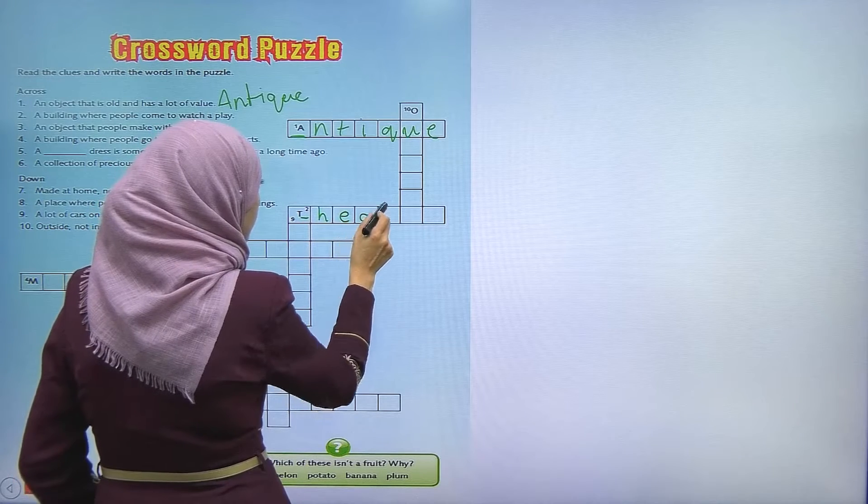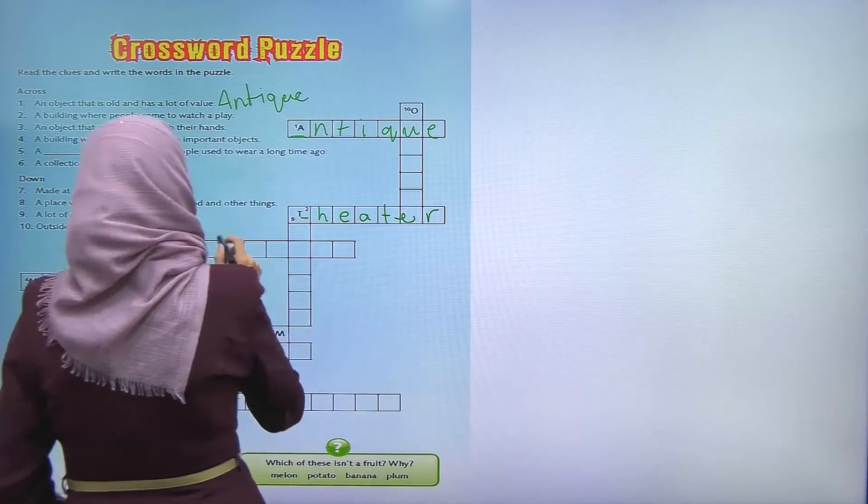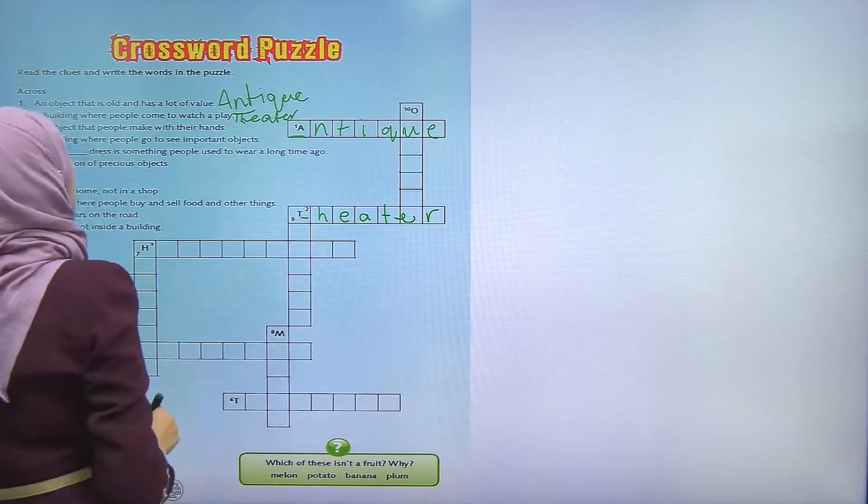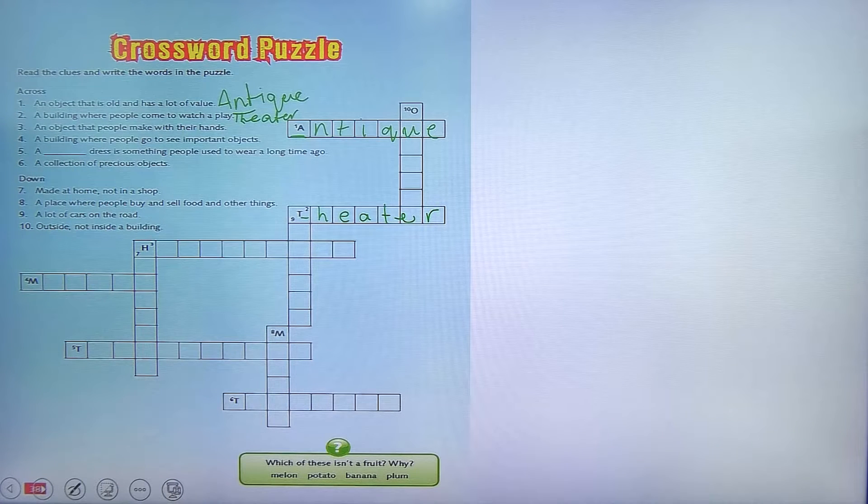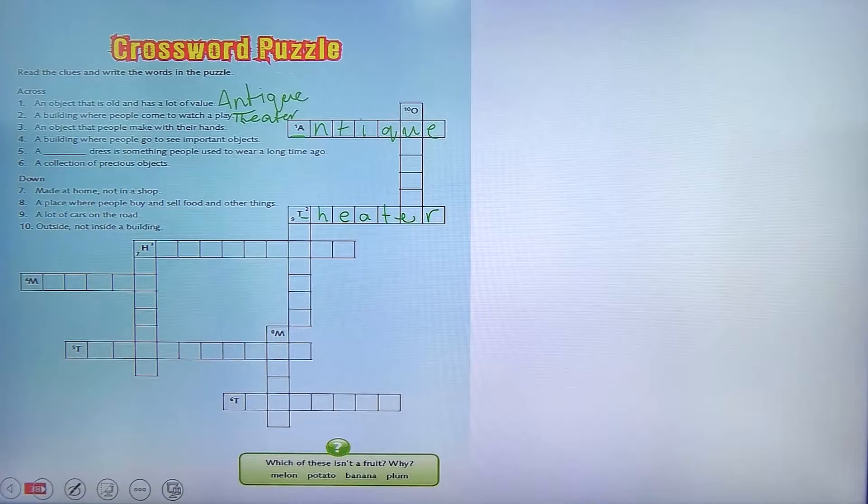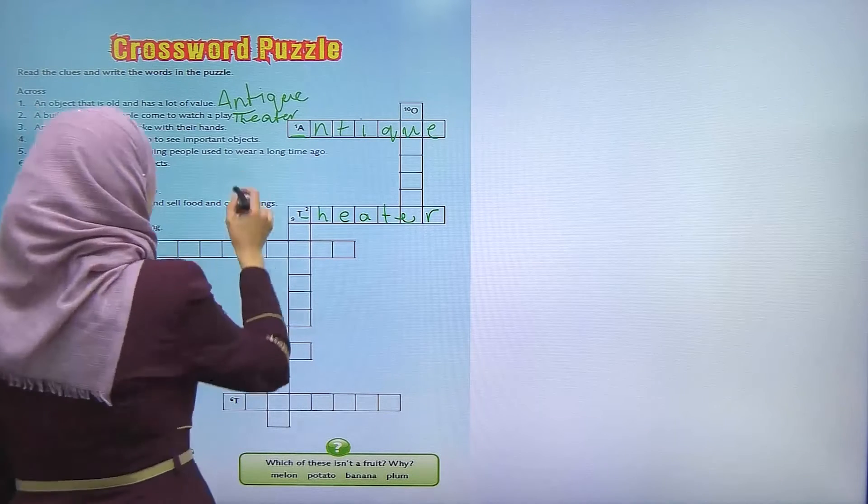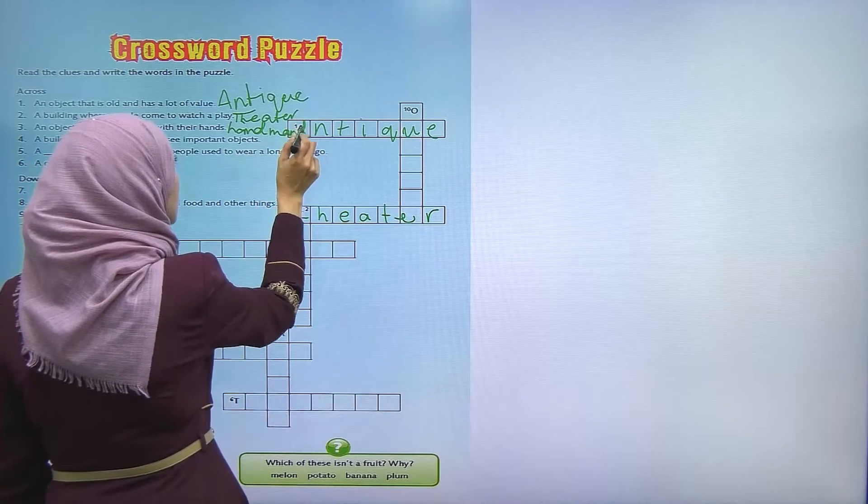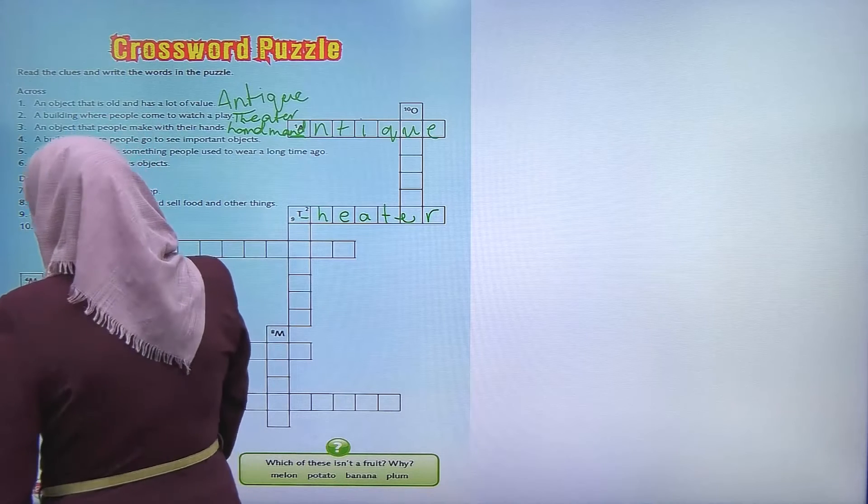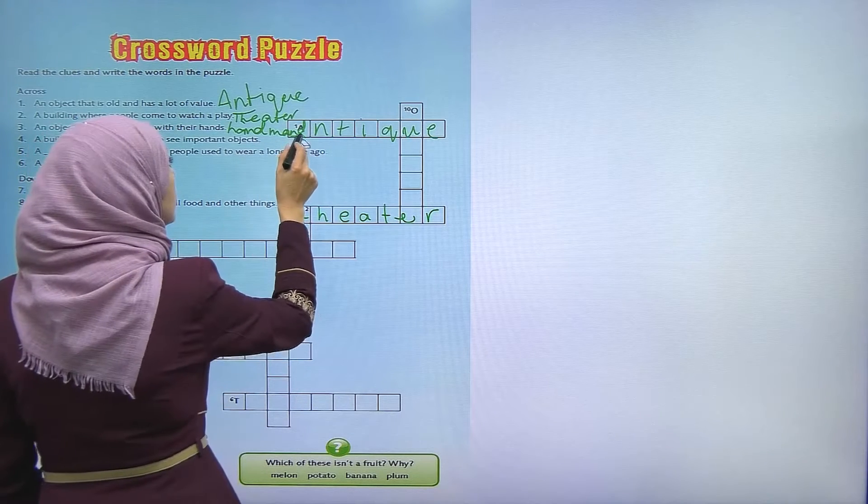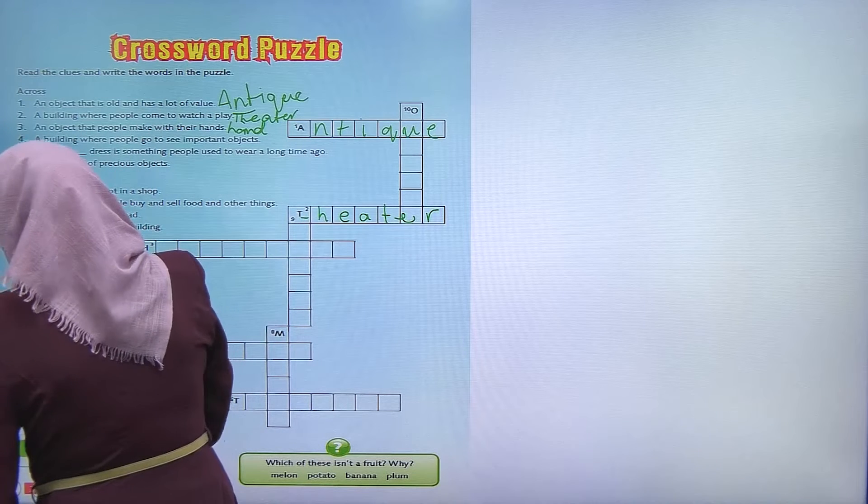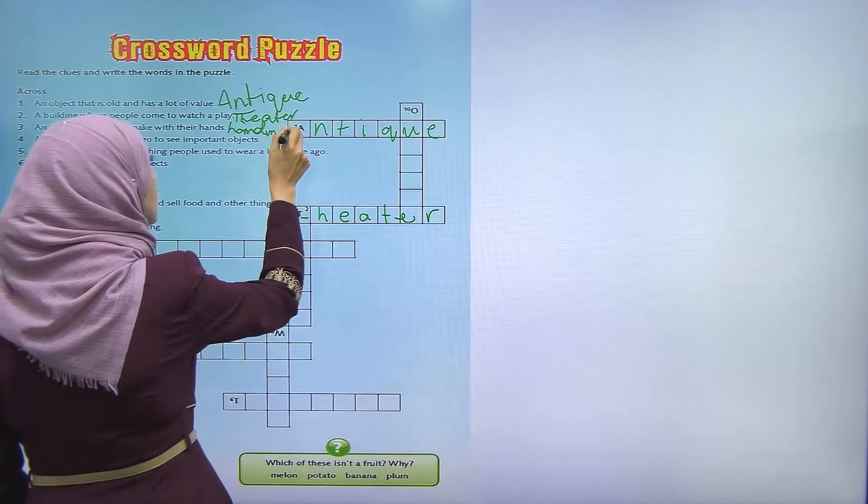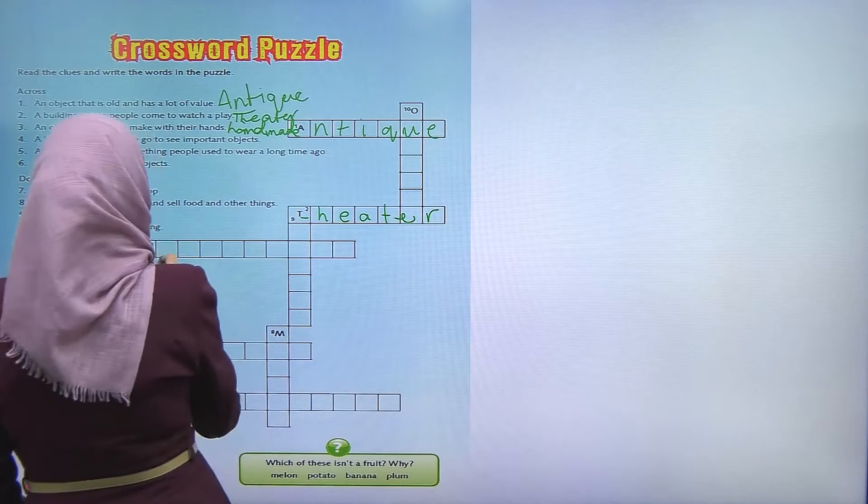Theater. Okay, the third one. An object that people make with their hands, so it's handmade. Handmade and made.